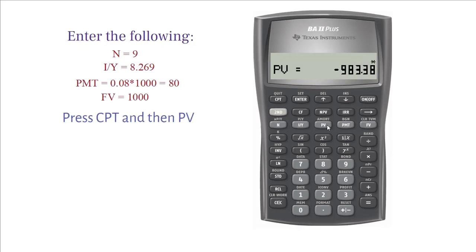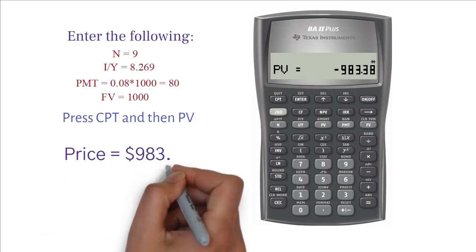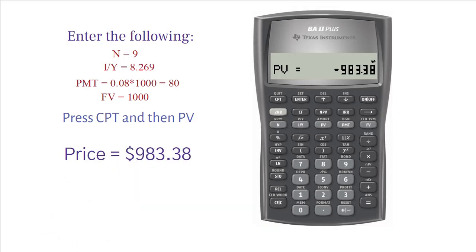Please note that PV value is considered cash outflow or a negative number. Just ignore the negative. So, the future market price of the bond is $983.38. In other words, the bond price 3 years from now would be $983.38.